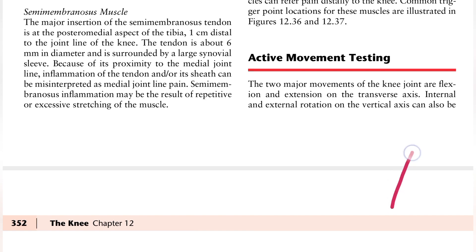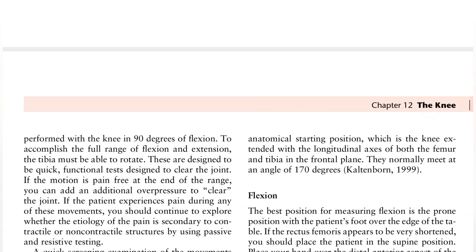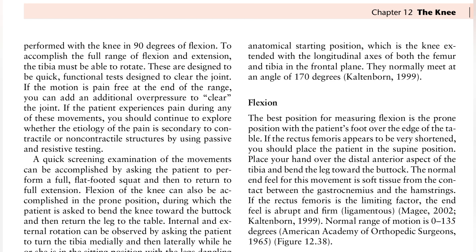What do we do with the vertical axis? When the knee goes to 90 degree flexion, we will talk about lateral and medial rotation. When we complete full range of flexion or extension, the tibia must be able to rotate. We have quick functional tasks that we use so that we can clear the joint, confirming there is no pathology.